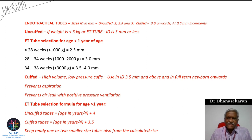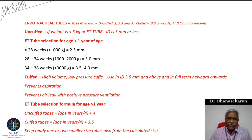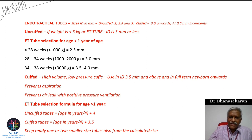The main advantages of the cuffed tube are: it prevents aspiration, prevents leakage of gases during positive pressure ventilation, and allows higher positive pressure ventilation when needed. For tube size selection, for less than one year of age, sizes start from 2.5. For above one year, the formula is: age in years divided by 4 plus 4 for uncuffed, or plus 3.5 for cuffed.